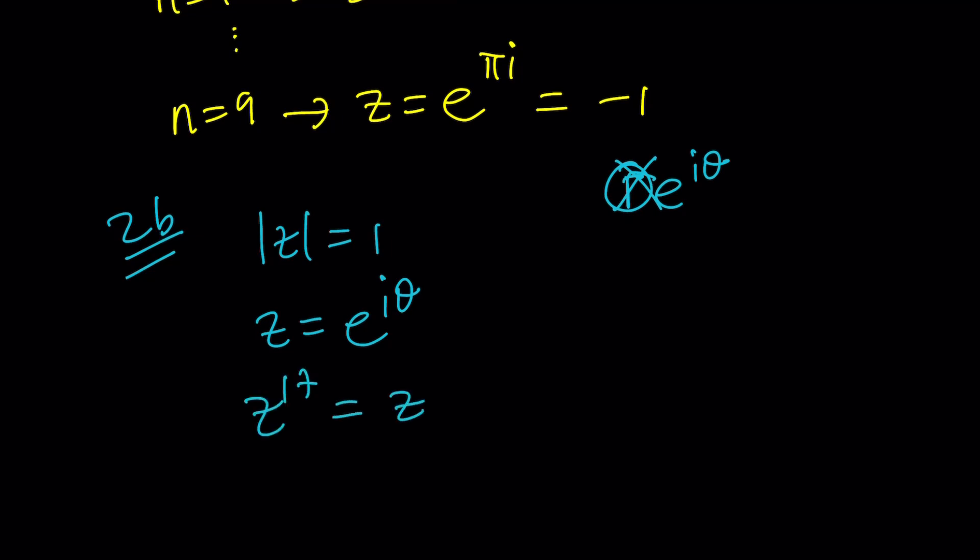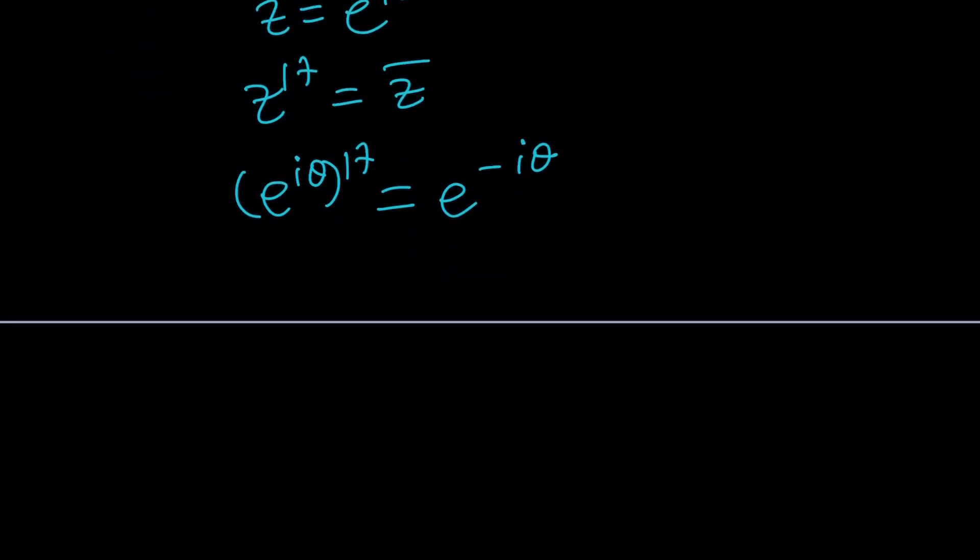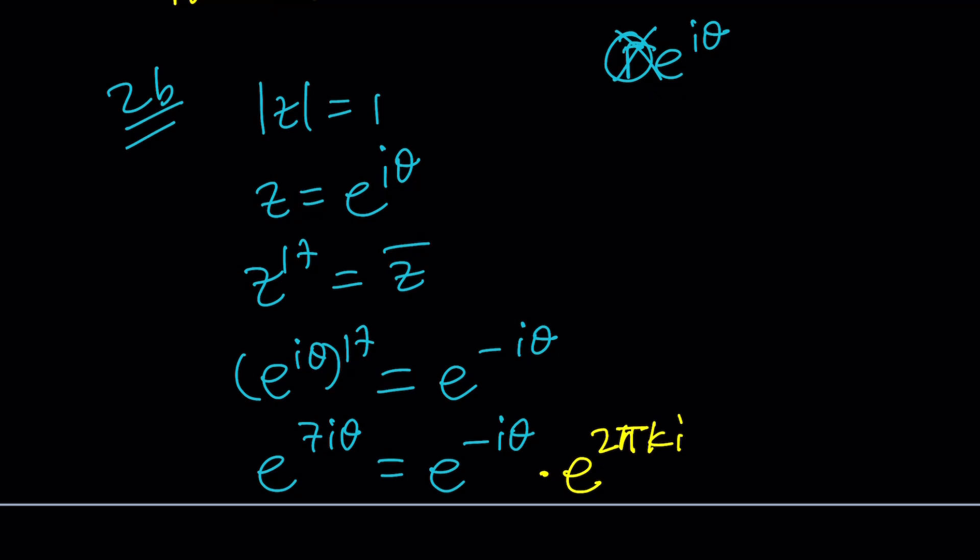And now we have an equation, z to the 17th equals z bar. Now, z to the 17th is e to the i theta to the 17th, and z bar is e to the power of negative i theta. By negating the theta, you're basically getting the conjugate, because cosine is even and sine is odd. And from here, we get e to the power 17i theta equals e to the negative i theta. But here's the thing. Before you set the exponents equal to each other, because we do have a period of 2n pi for the exponential function. In other words, I can just multiply the right-hand side by e to the power 2 pi ki. Let's just use k. We used n before.